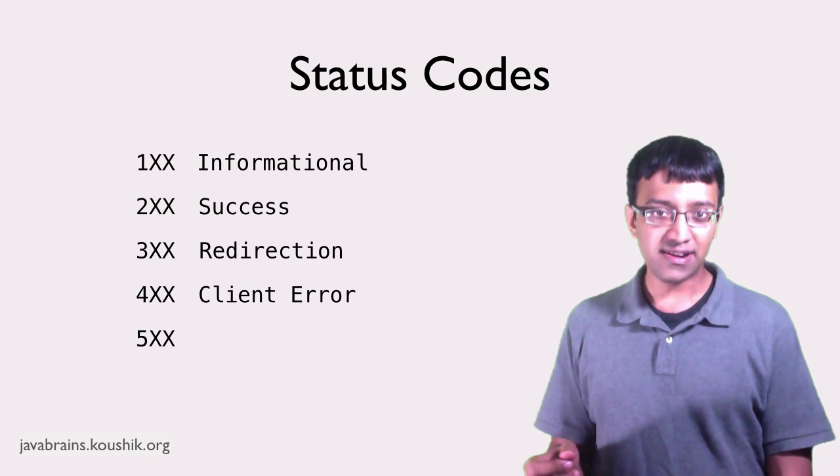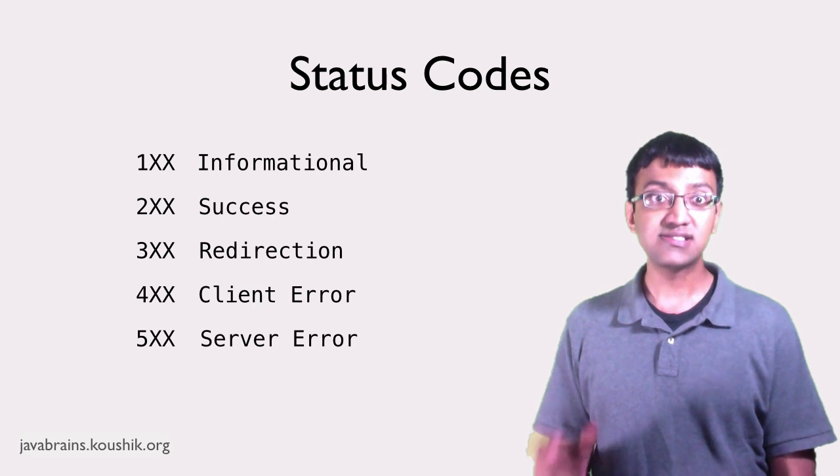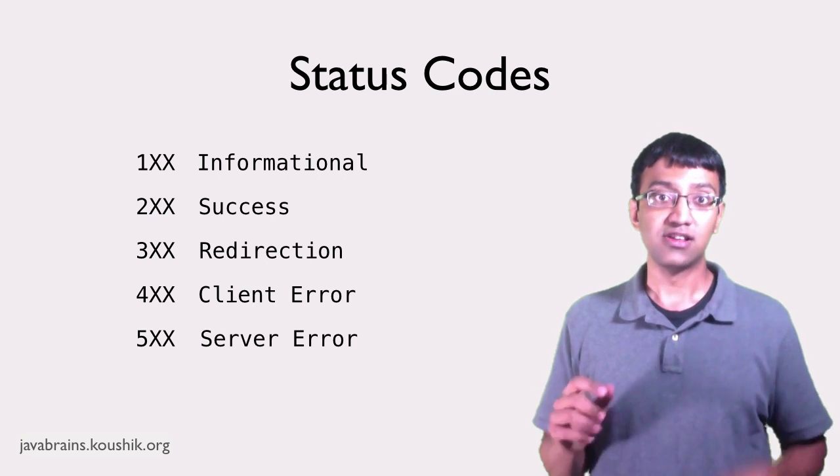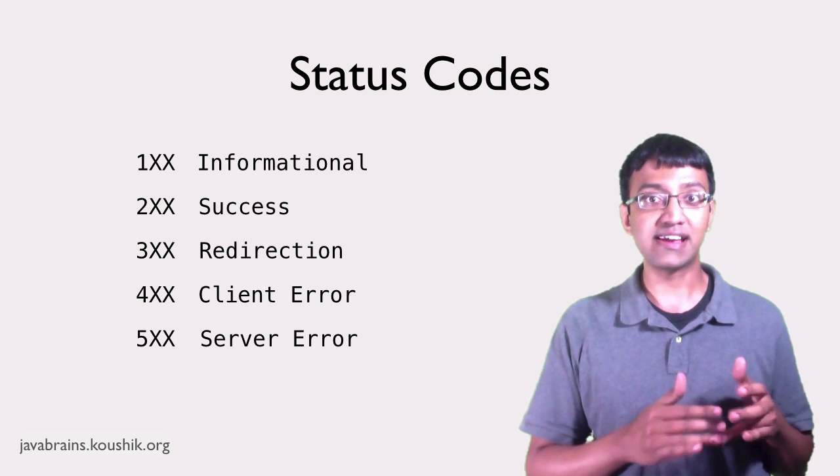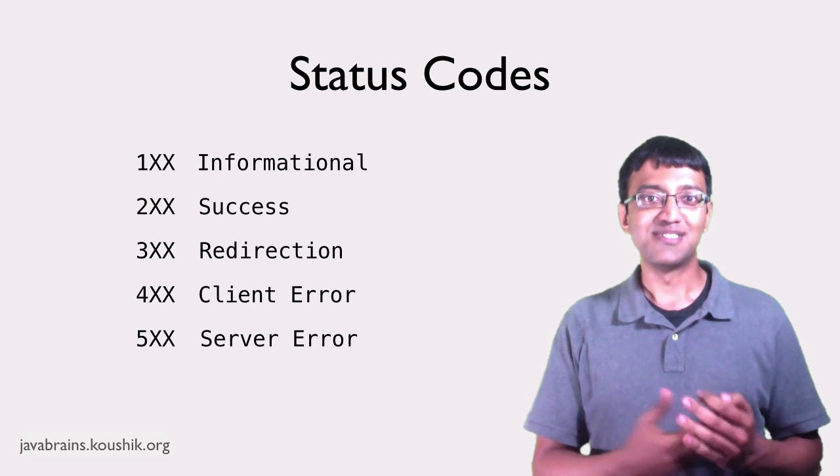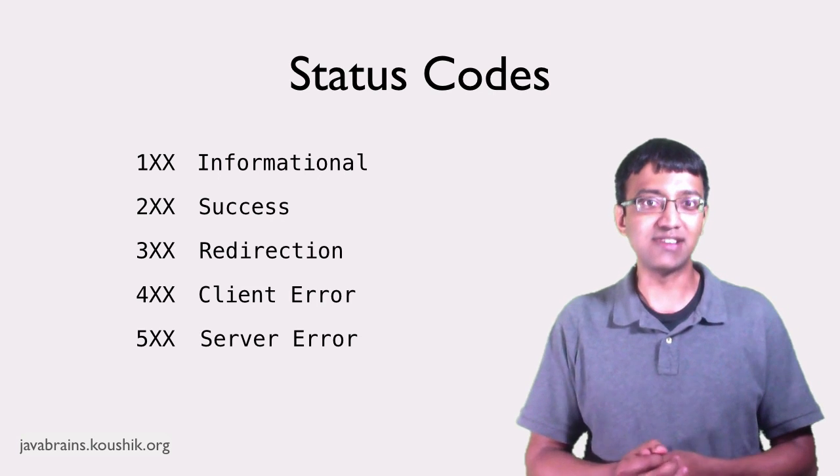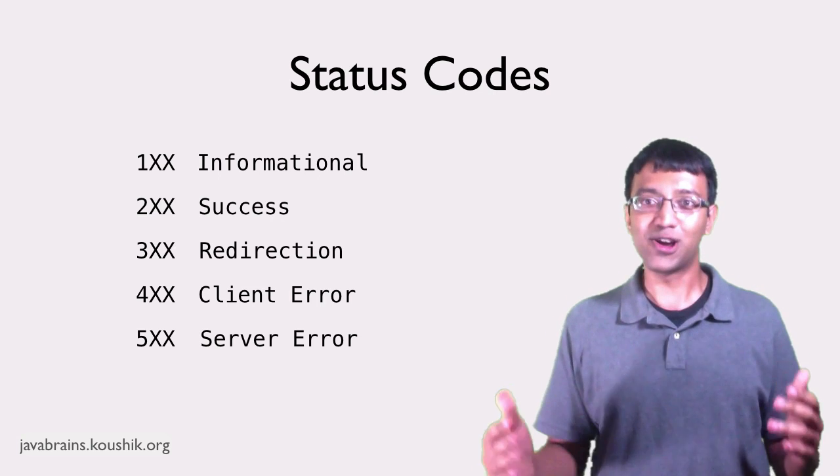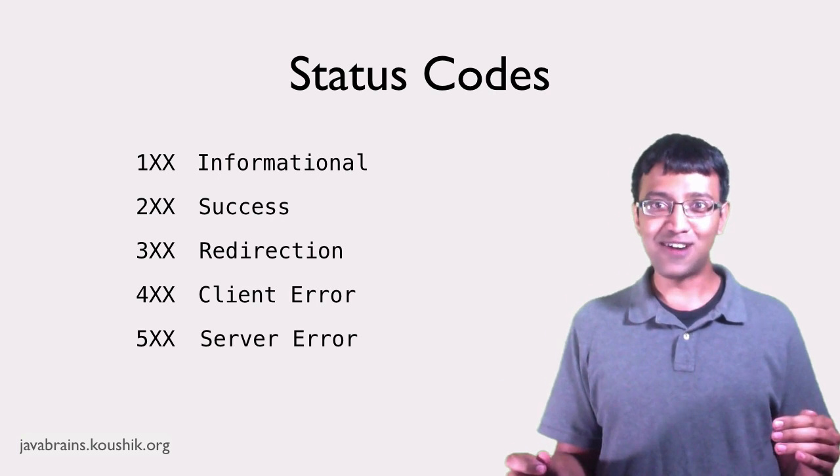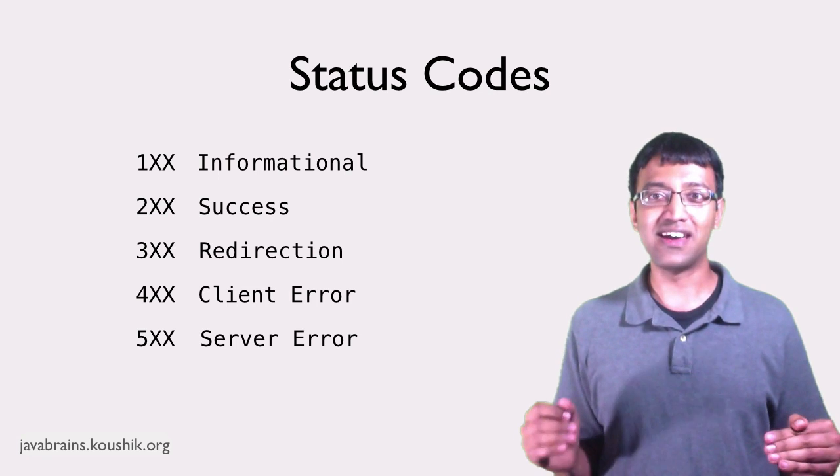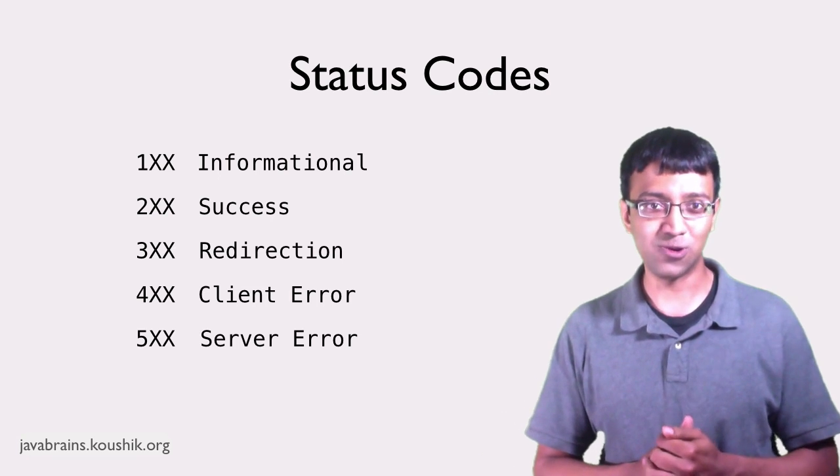So finally, the 500 codes indicate server error. The 400 codes are when the client screws up something when sending the request. The 500 codes are when the server screws up something when sending the response back. So it's basically the server saying, okay, I got your request. It looked like a valid one, but something went wrong when I tried to process it. So it returns the 500 codes.